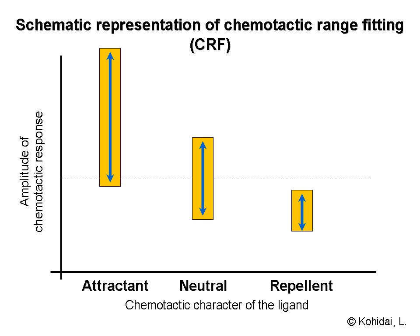Chemotactic responses elicited by the ligand-receptor interactions are distinguished generally upon the optimal effective concentrations of the ligand. Nevertheless, correlation of the amplitude elicited and ratio of the responder cells compared to the total number are also characteristic features of the chemotactic signaling.